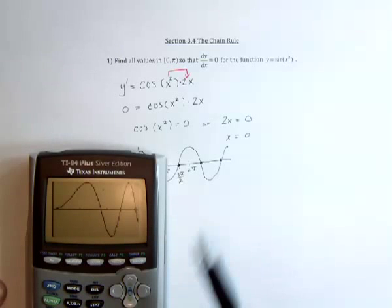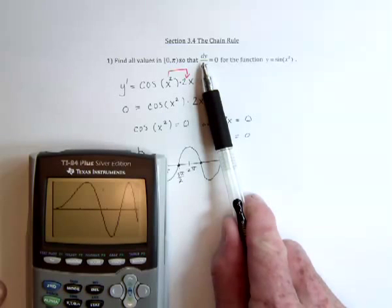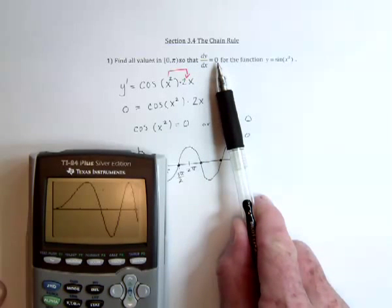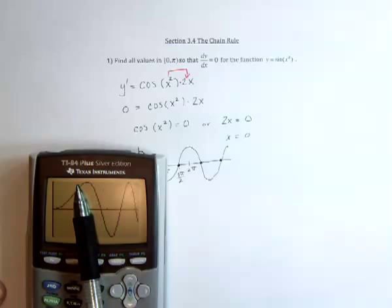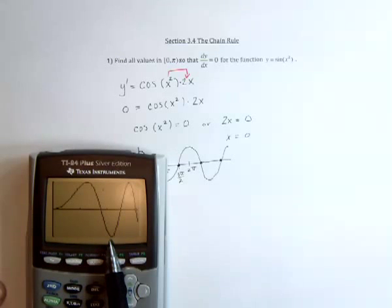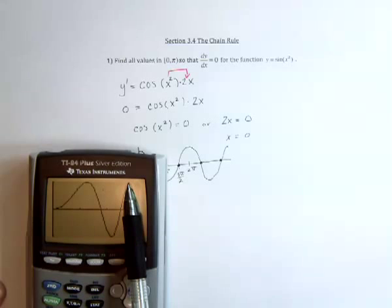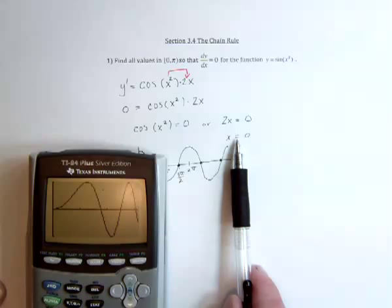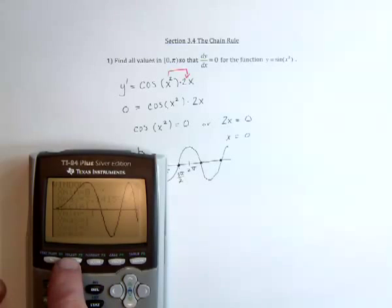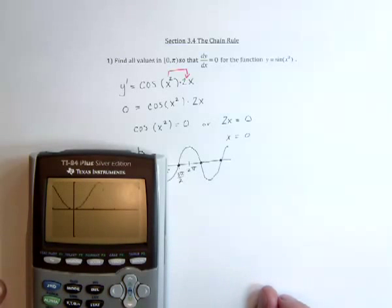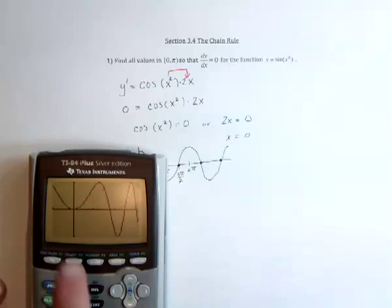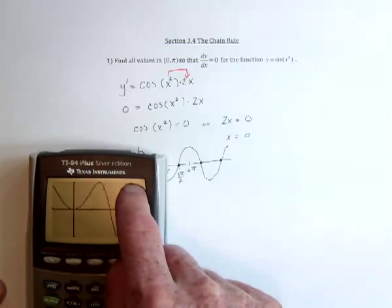So the question is asking for when the slope equals zero for the tangent line. So that would be a horizontal tangent line, which would happen right here, down here, and up there. And also we found that x equals zero. So if I change the window just slightly, have it go from negative one to pi, you can see that, sure enough, x equals zero. There would also be a horizontal tangent line right there. So we need one, two, three, four solutions.